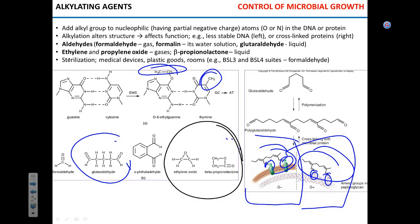Beta-propiolactone and ethylene oxide both possess a unique oxygen between carbons, which makes them really powerful alkylating agents. Ethylene oxide is often used to sterilize plastic goods. Beta-propiolactone is a liquid and is a powerful sterilant that can be applied to surfaces.